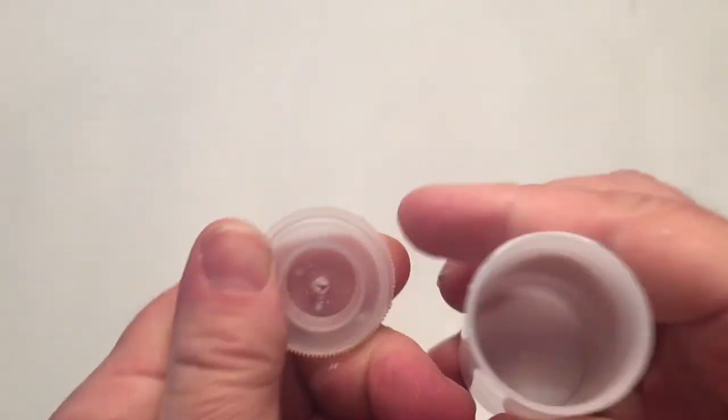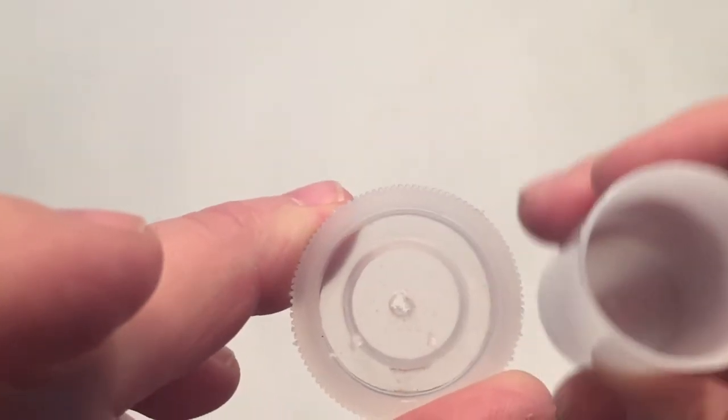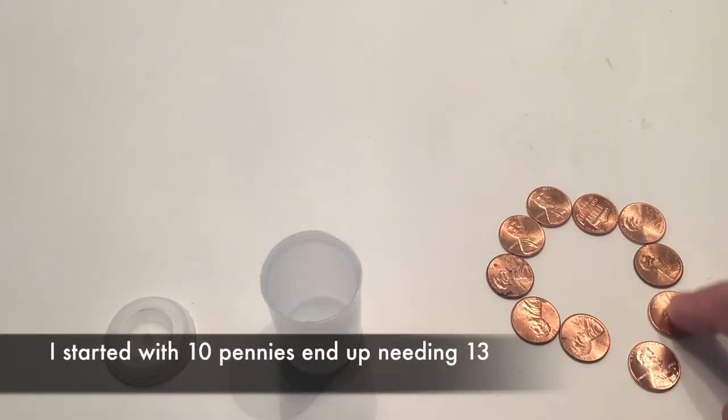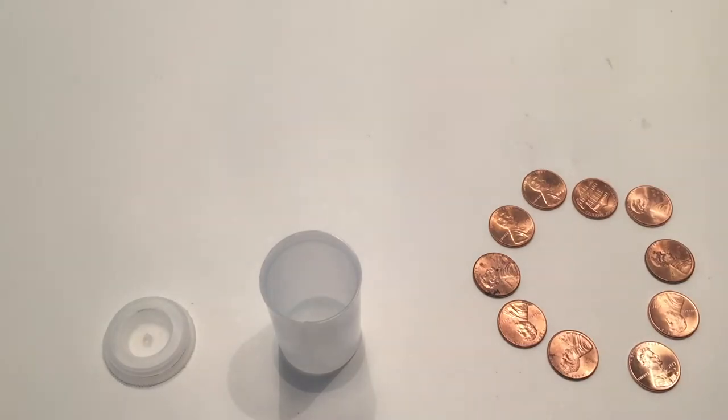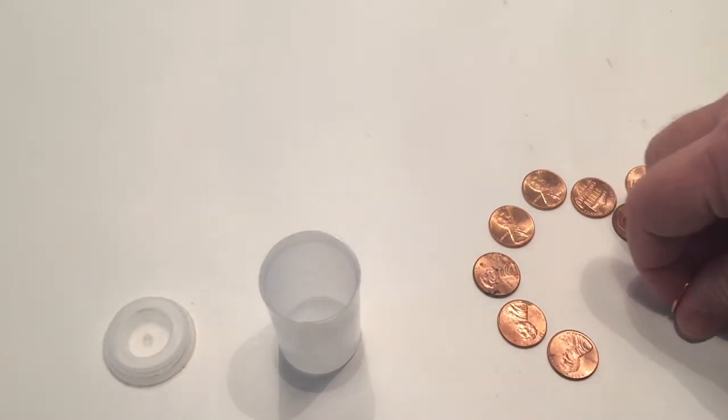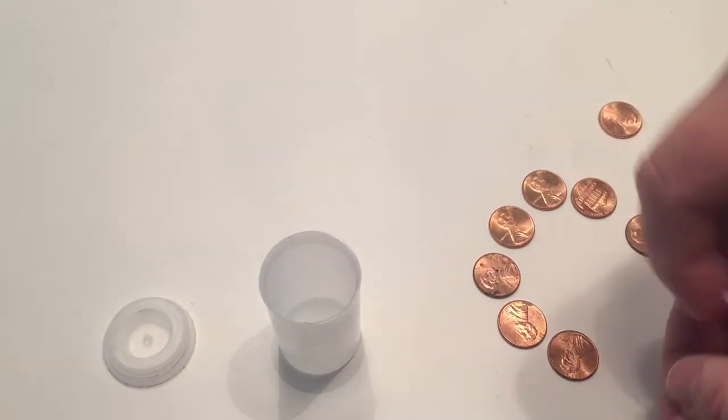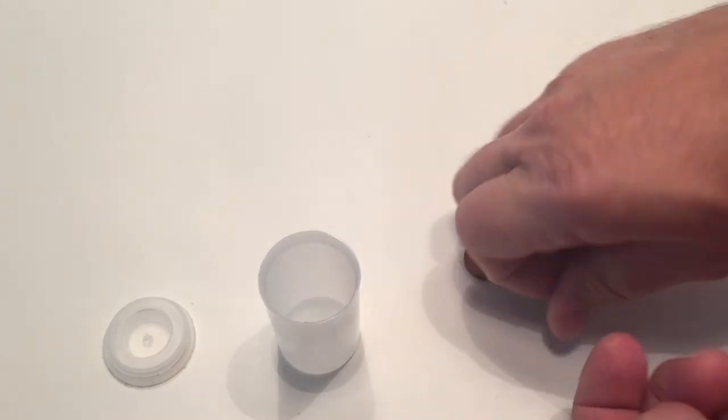Anyway, I got the small hole, pop it open, and now you got to do a little bit of figuring out how many pennies you're going to need to make the canister sink. So I'm starting off with 10 here, but I'm going to end up needing 13.